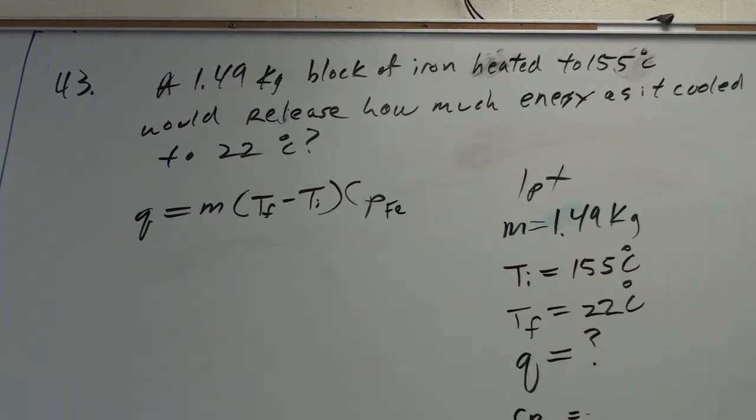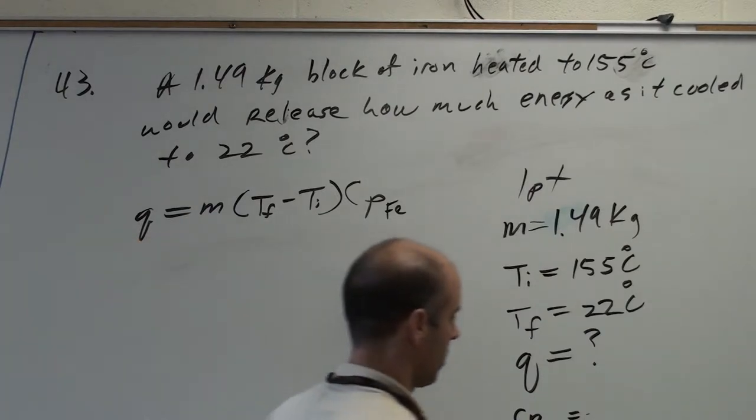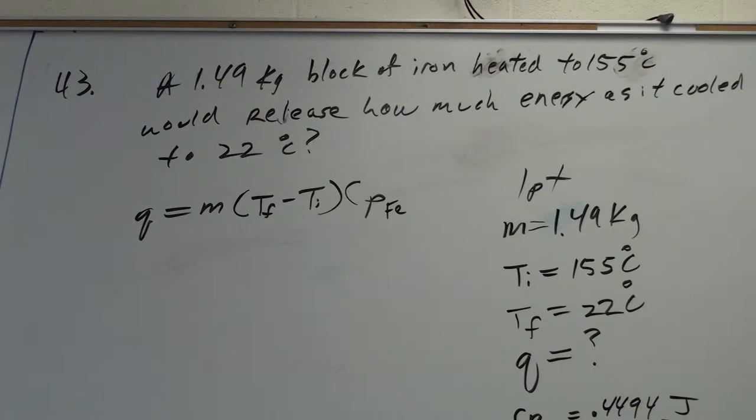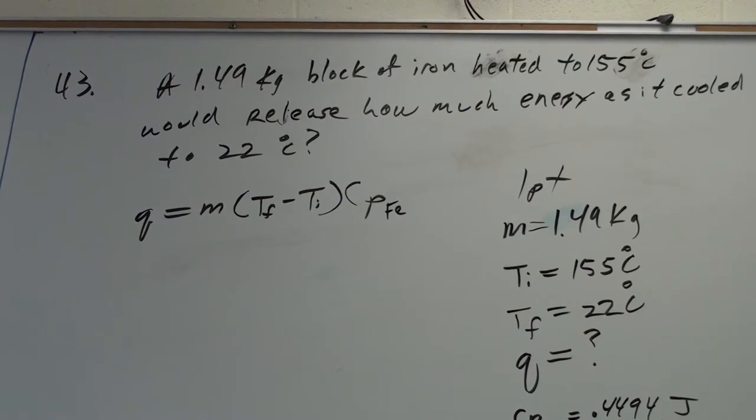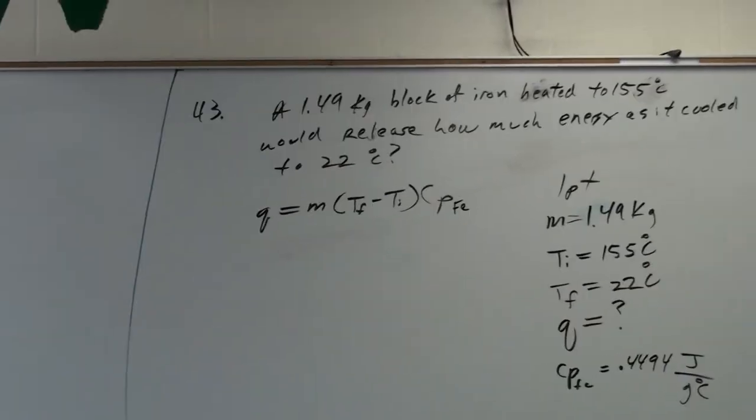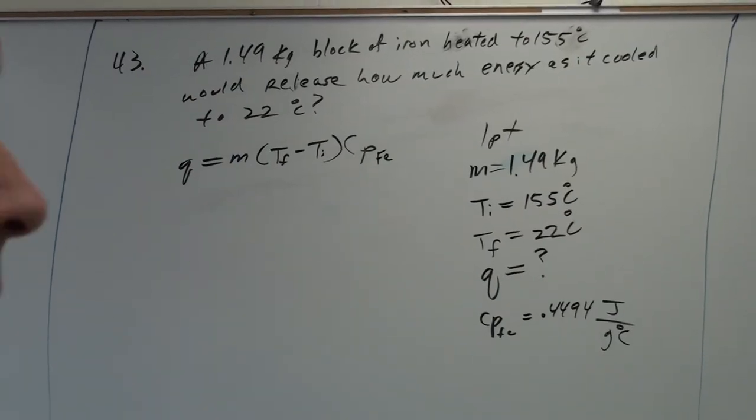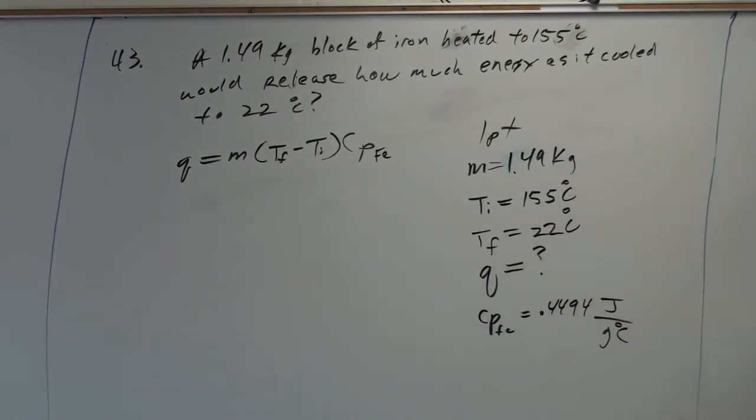And you can look it up in appendix here. So, this is P1. And the specific heat of iron is 0.4494. So now we have all the information we need to solve it.